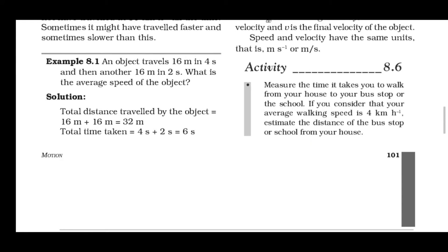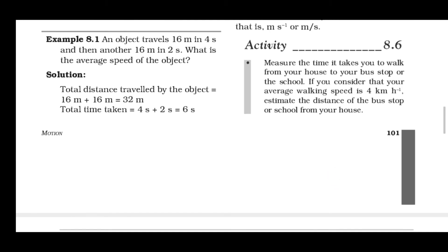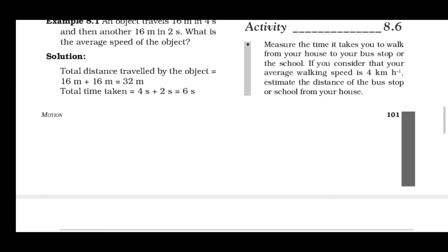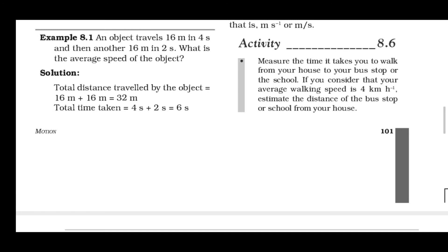Activity 8.6: Measure the time it takes you to walk from your house to your bus stop or school. If you consider that your average walking speed is 4 km per hour, estimate the distance of the bus stop or school from your house. इसके अंदर आप measurement करो time का जब आप घर से bus stop या school जाते हो।